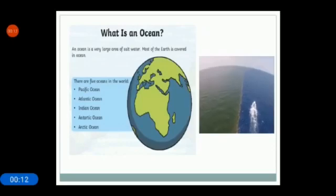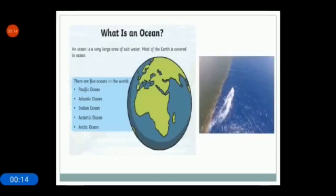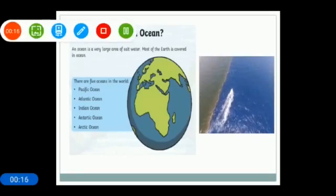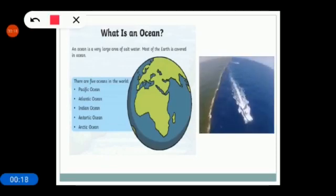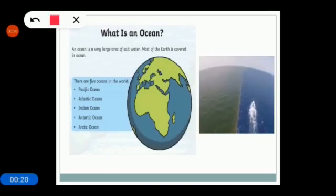What is an ocean? An ocean is a very large area of salt water. Most of the earth is covered in ocean. You can also say ocean is a large area of water between continents.